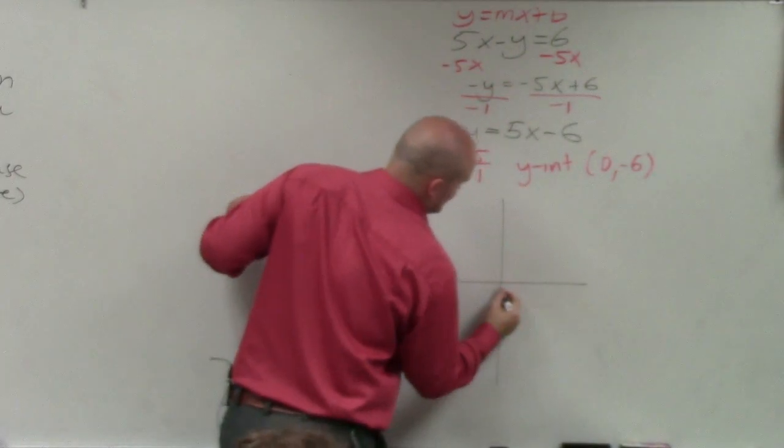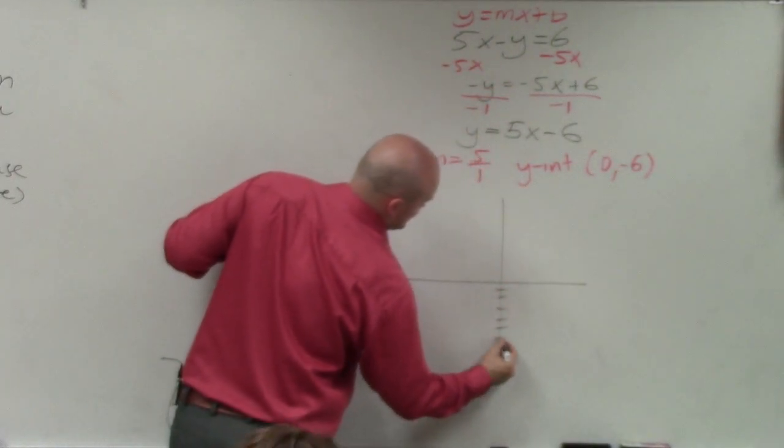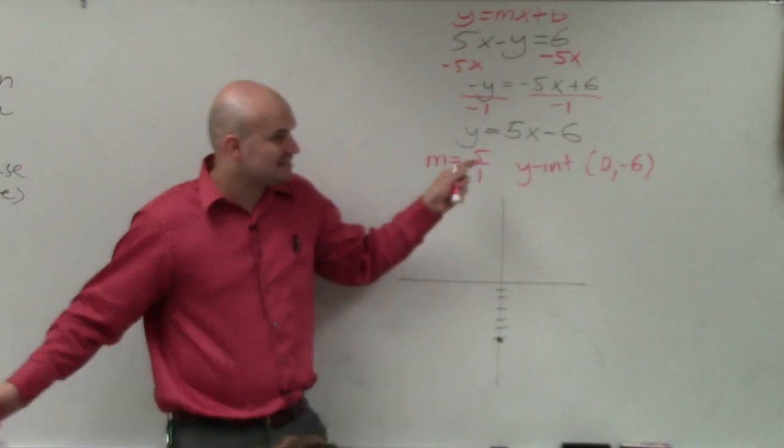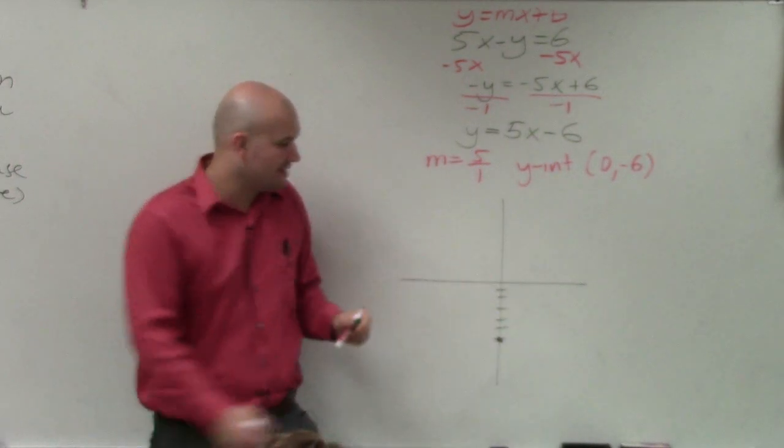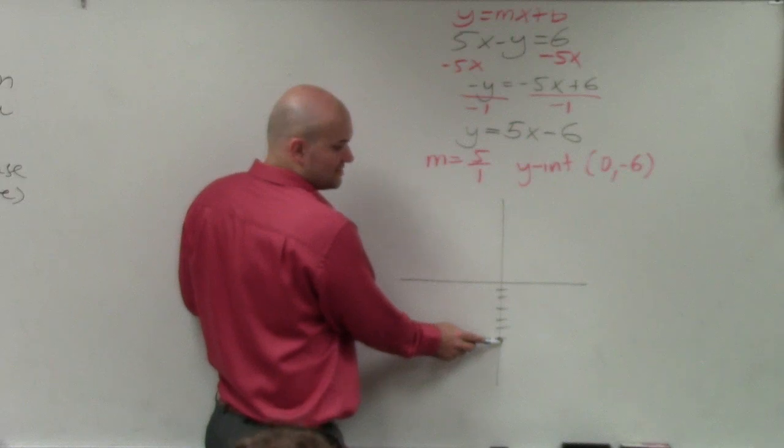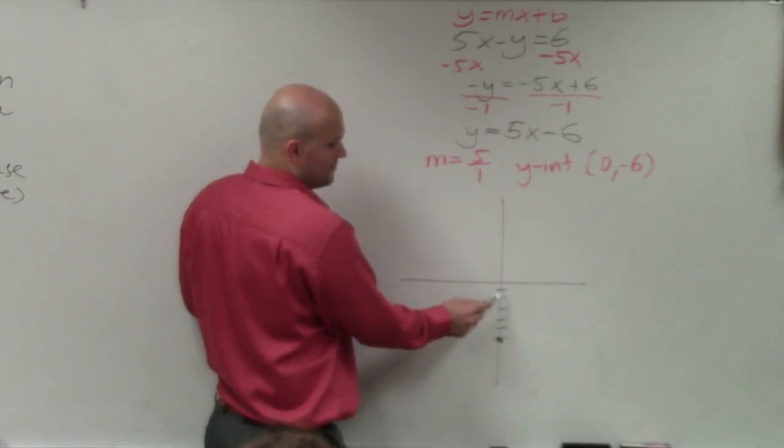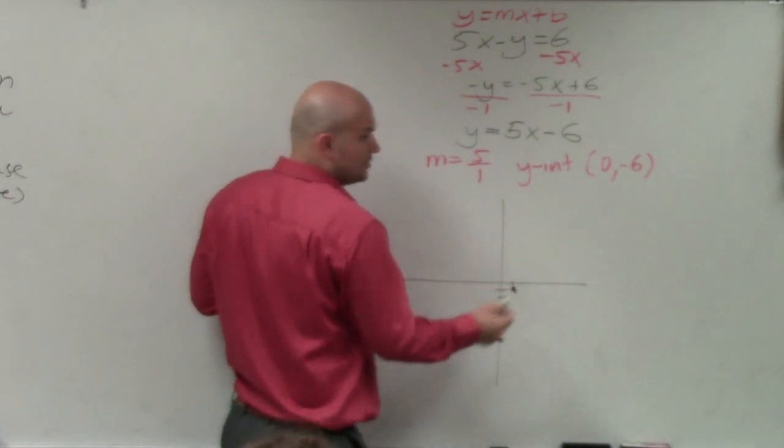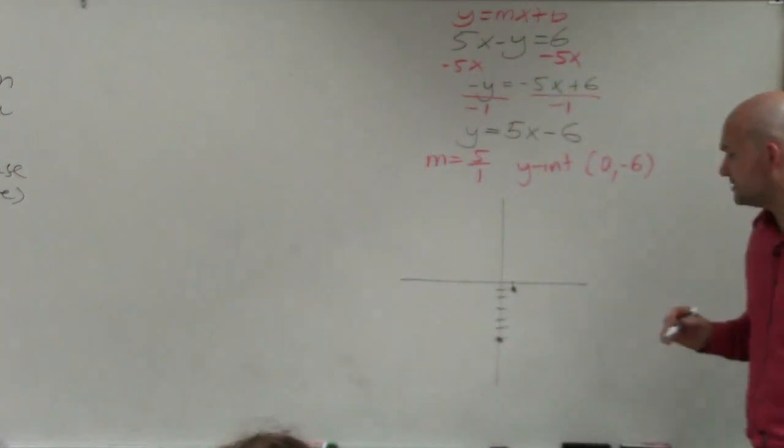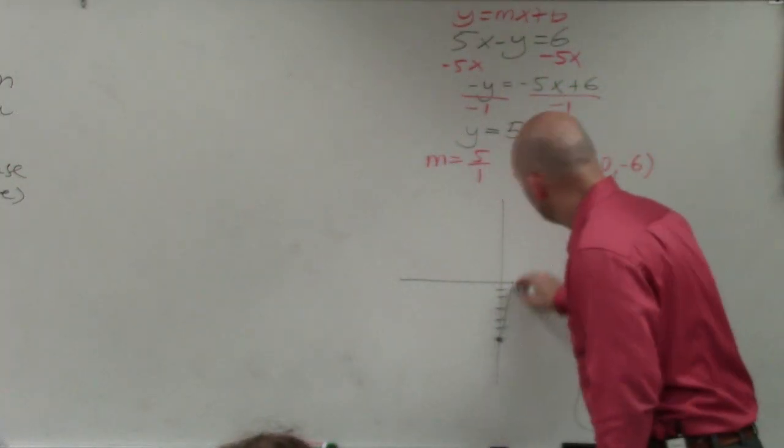Now I'll just go down to negative 6. And then I'll use my slope of up 5 to the right 1. So from my y-intercept, up 5, over 1. And you only need to follow the slope to another point because it only takes two points to draw a line.